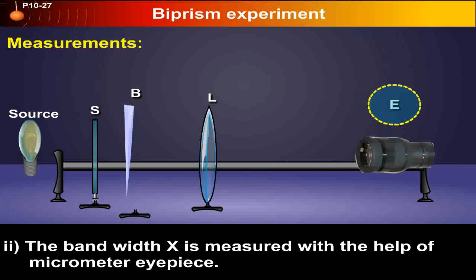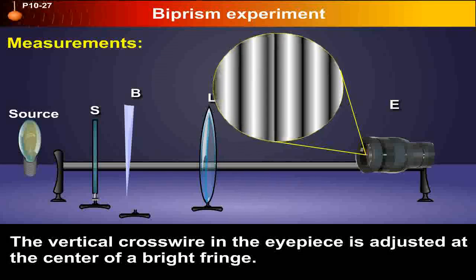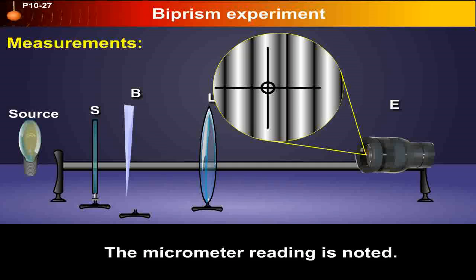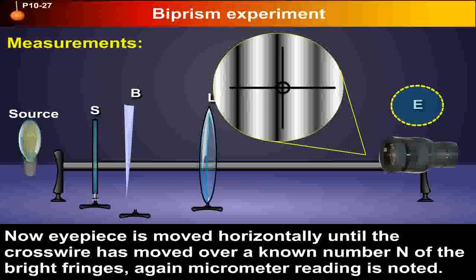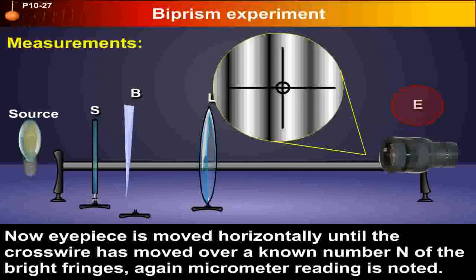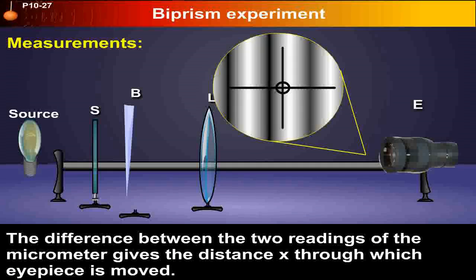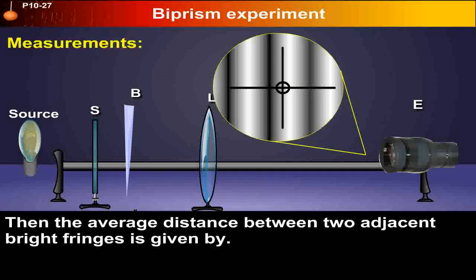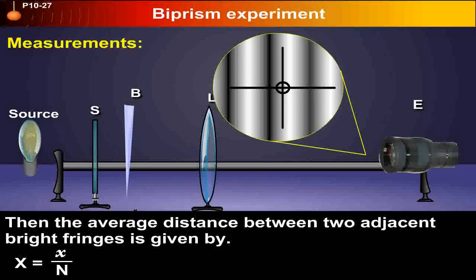Two, the bandwidth x is measured with the help of the micrometer eyepiece. The vertical crosswire in the eyepiece is adjusted at the center of a bright fringe and the micrometer reading is noted. Now the eyepiece is moved horizontally until the crosswire has moved over a known number n of bright fringes. Again, the micrometer reading is noted. The difference between the two readings gives the distance through which the eyepiece is moved. Then the average distance between two adjacent bright fringes is given by x equals small x upon n.